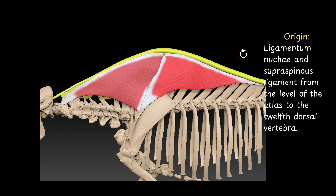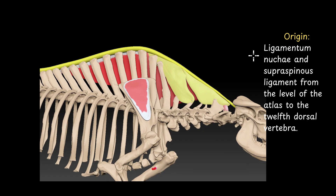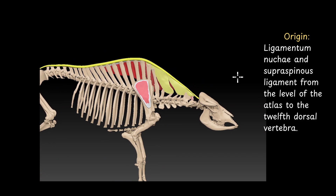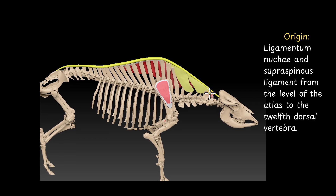Origin of the muscle: the muscle originates from ligamentum nuchae and supraspinous ligament. So this is the ligamentum nuchae, and this ligament is the supraspinous ligament. The trapezius originates from ligamentum nuchae and supraspinous ligament from the level of atlas to the 12th dorsal vertebra.